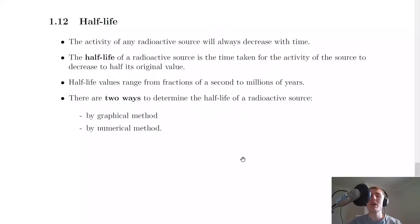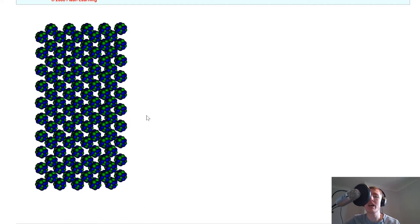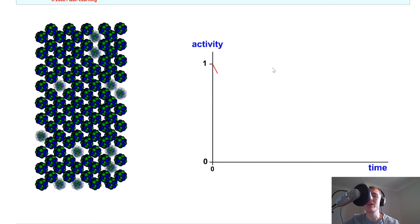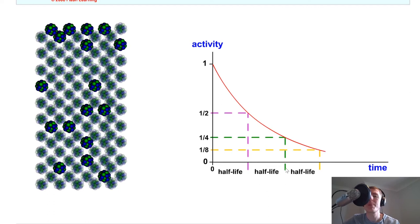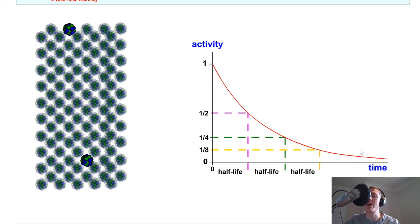The first thing to be aware of is that the activity of any radioactive source will always decrease with time. Imagine you've got a radioactive source containing all of these radioactive nuclei — we're going to look at what happens to the overall activity of the source as these nuclei decay over time, shown on a graph of activity against time. All of these nuclei start to decay and our activity starts off at some value and decreases over time, eventually producing a curve called an exponentially decaying curve.